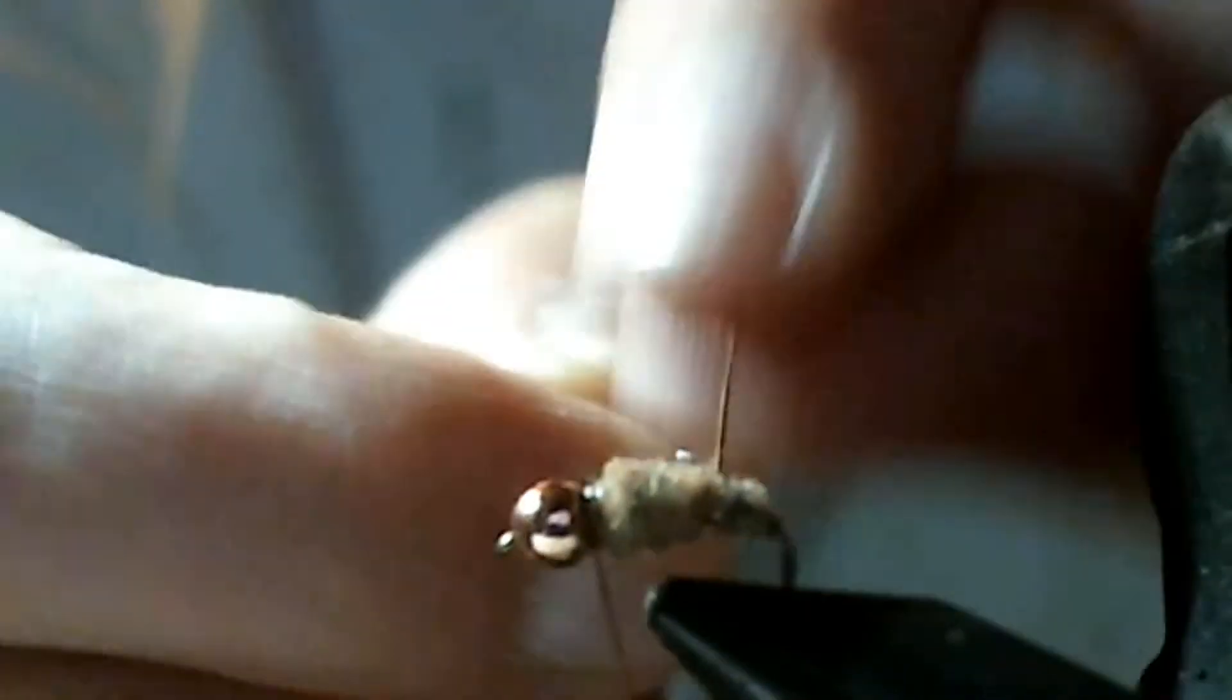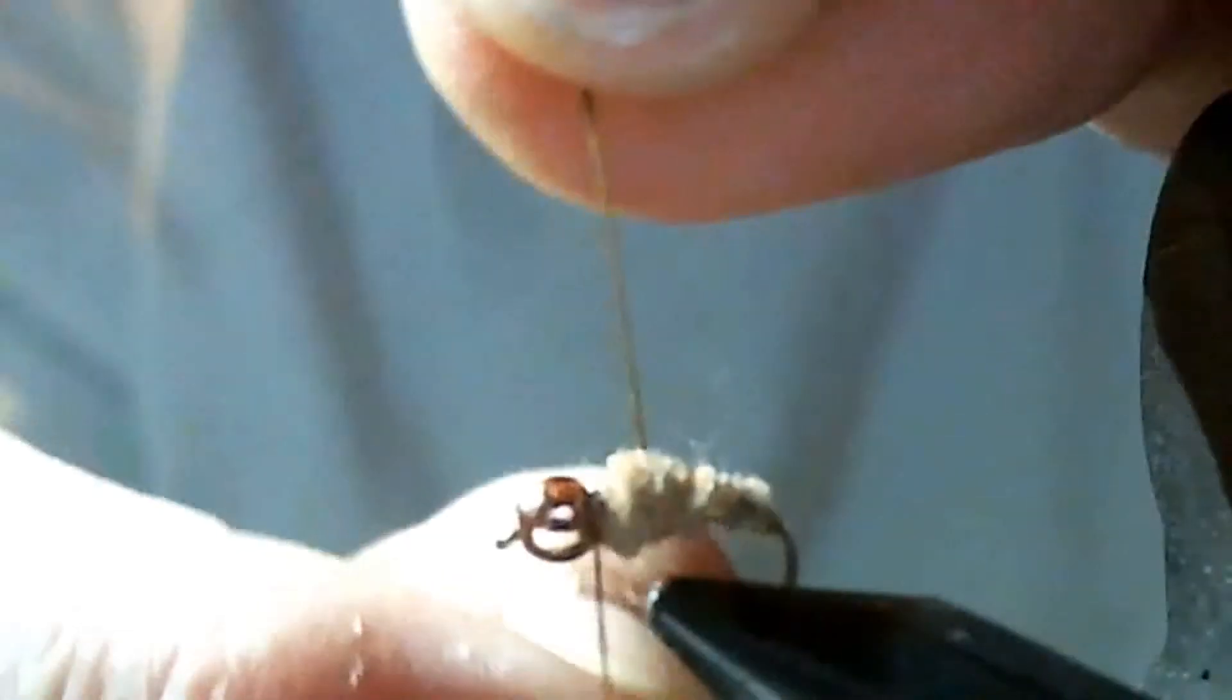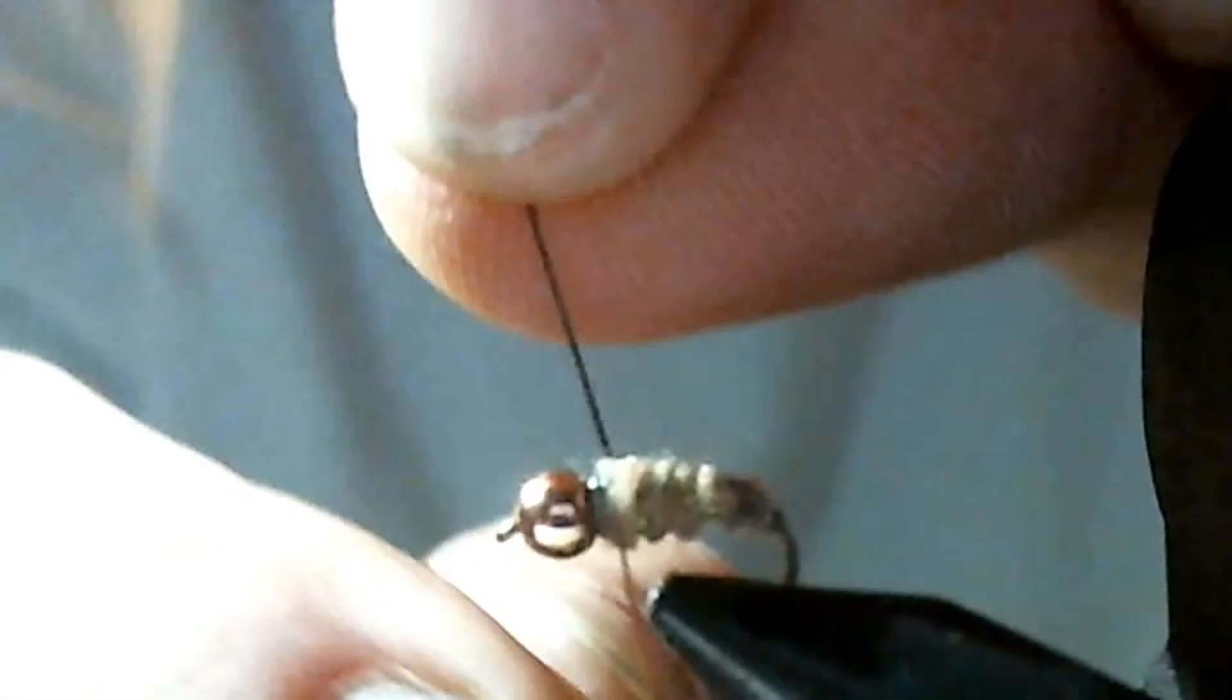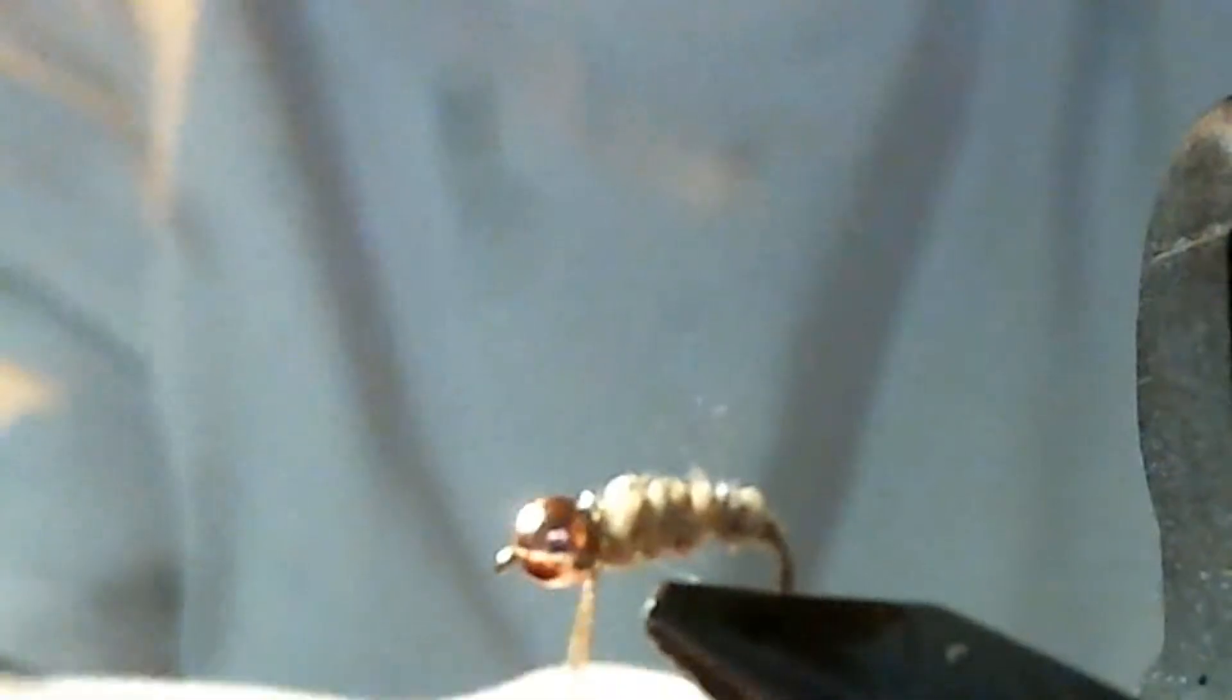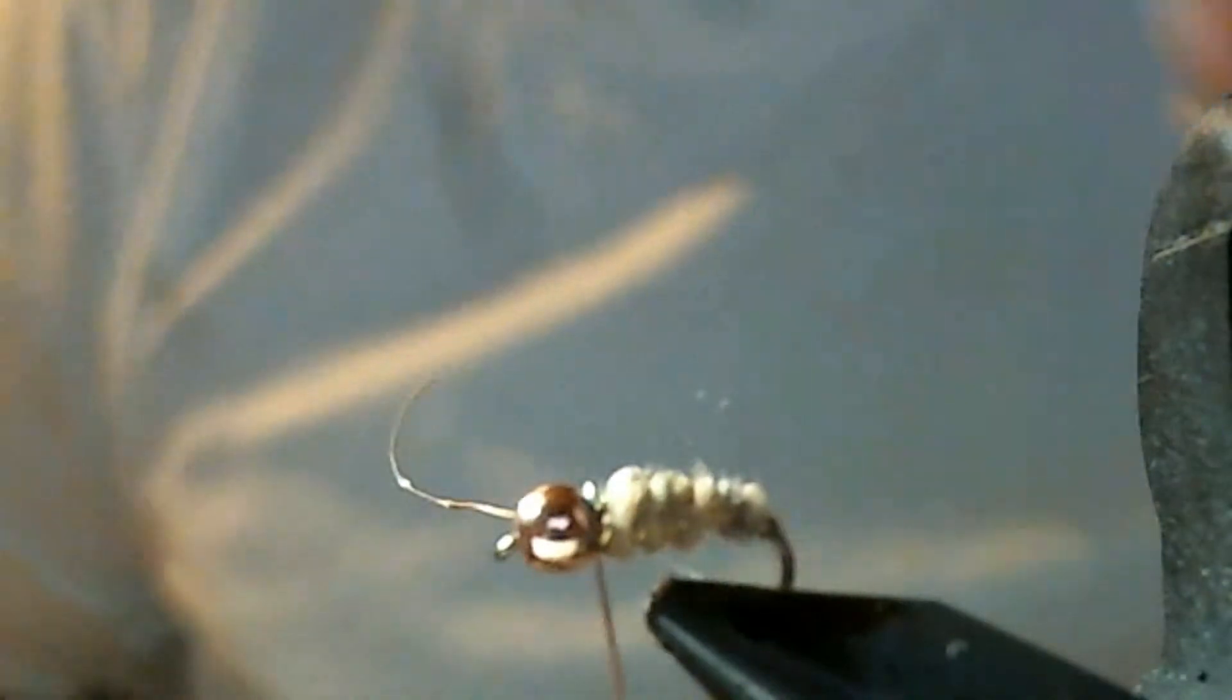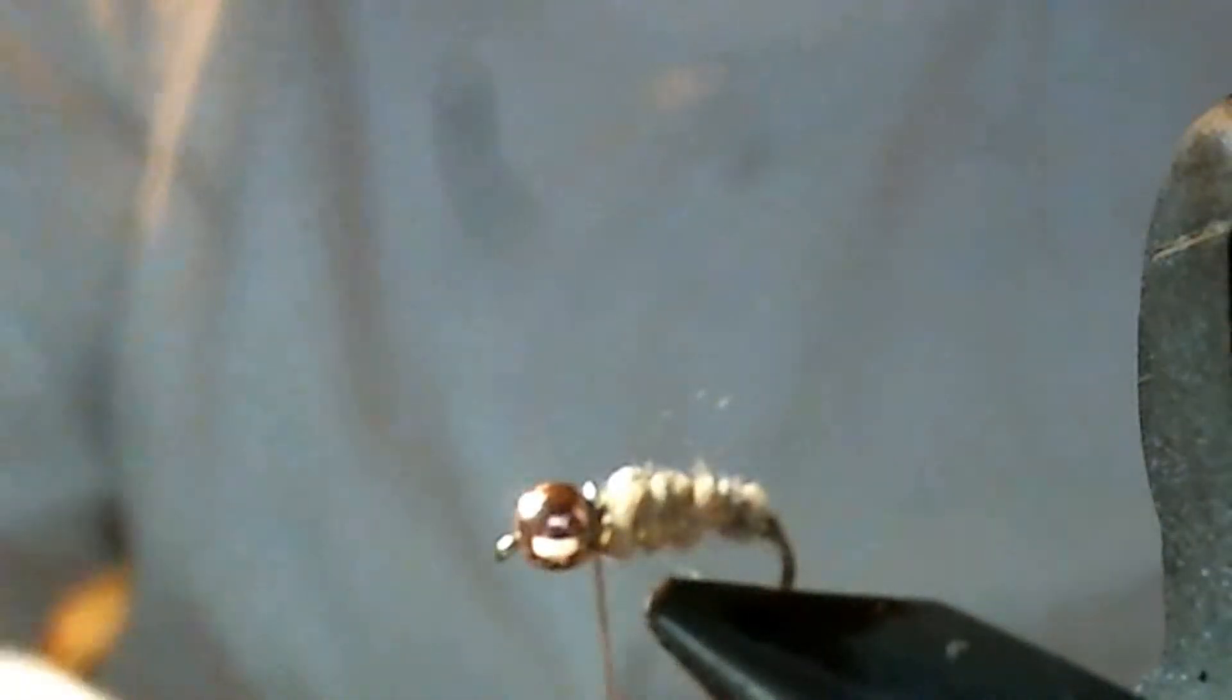And when you rib, I'm trying to make the wraps even. I mean, they don't have to be perfect, but the closer to even I get them, the better they work. Let me tie that off. Cut this off. Like when I started, I told you this is an easy fly.